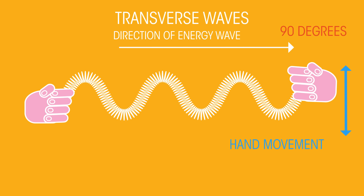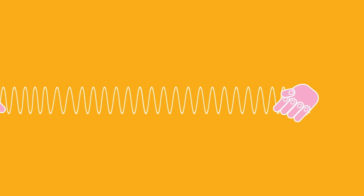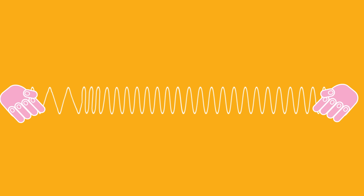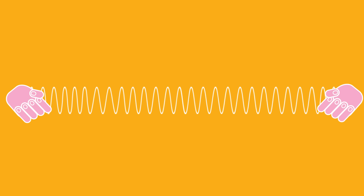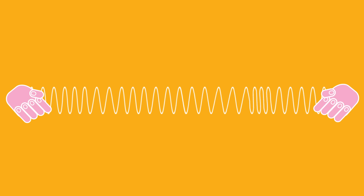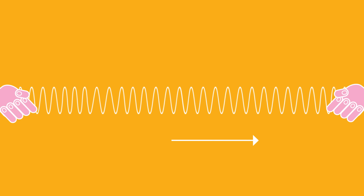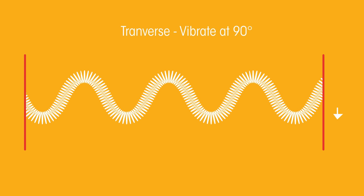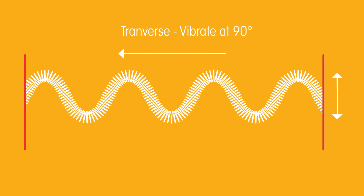So the particles vibrate at 90 degrees to the direction that the energy is moving. We can simply think of it as: in longitudinal waves, the hand pulses horizontally, pushing and pulling, and the wave energy also moves horizontally, back and forward. Whereas in transverse waves, the hand moves up and down, but the wave energy still moves horizontally.